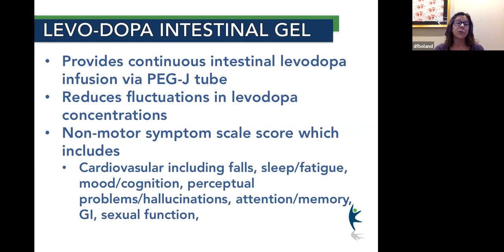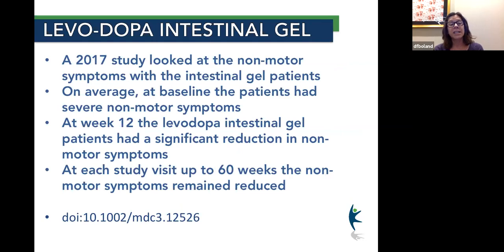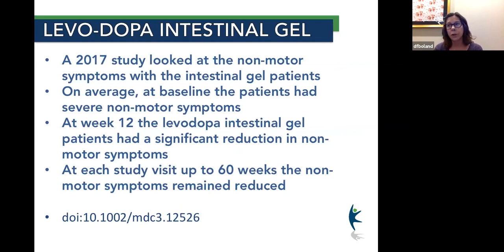For completeness, I need to mention the levodopa intestinal gel — DUOPA — which is another continuous delivery treatment method for Parkinson's disease. There's evidence showing non-motor symptoms are also helped with DUOPA, similar to DBS. A 2017 study showed that intestinal gel patients had severe non-motor symptoms at baseline, but at 12 weeks had a significant reduction in non-motor symptoms, and these remained reduced at each study visit up to 60 weeks. DUOPA is an efficacious option for both motor and non-motor symptoms.